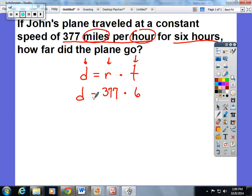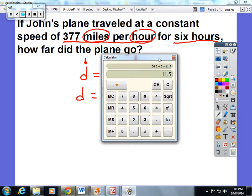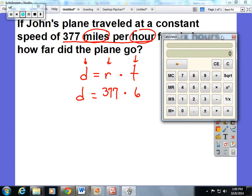So I'm looking for my D distance. So I'm going to actually multiply 377 times 6, and the distance traveled is 2,262 miles.